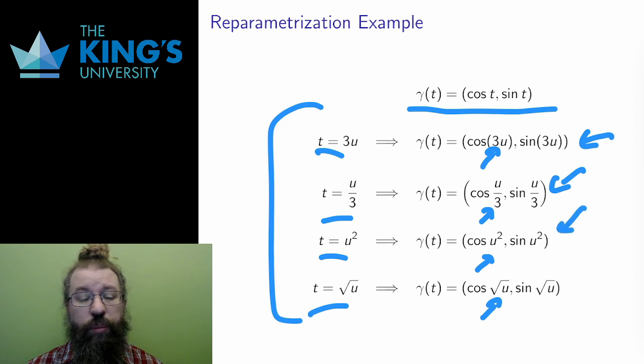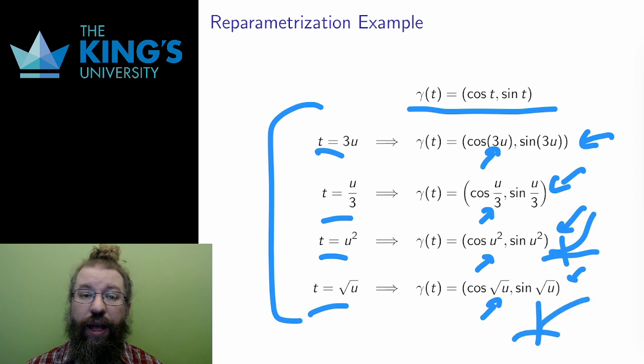u squared will start out a bit slower, but then accelerate as the square function grows quickly. And likewise, root u will start out faster, but then decelerate as the root function goes slowly. In this way, they all describe different motions around the circle.